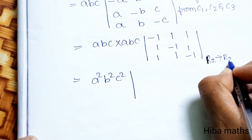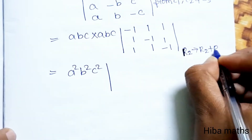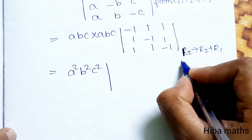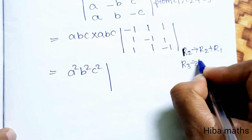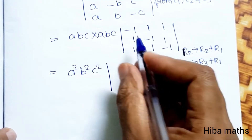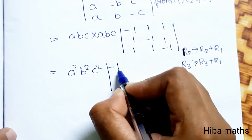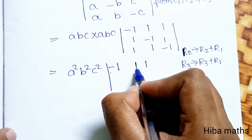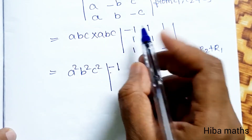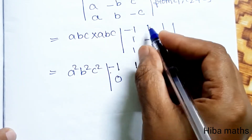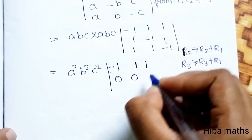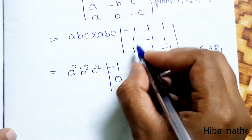Now I will change the determinant using row operations. R2 turns to R2 plus R1: minus 1 plus 1 is 0; 1 minus 1 is 0; 1 plus 1 is 2. That is R2. R3 turns to R3 plus R1: minus 1 plus 1 is 0; 1 plus 1 is 2; 1 minus 1 is 0. That is R3.